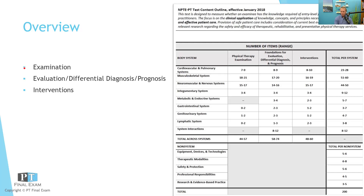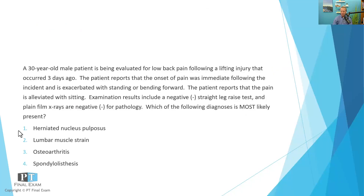The way this is structured is that we go through each of the main body systems, covering the content areas including examination, differential diagnosis, prognosis, and intervention. We go through each of these and then cap that off with practice questions each week, so that you can apply what you've learned and make sure you're really solid on test day. Today we're talking about the musculoskeletal system, so let's dive into our practice question. I'll read you the question, give you a moment to respond, and then we'll continue on with the content.